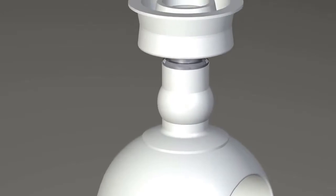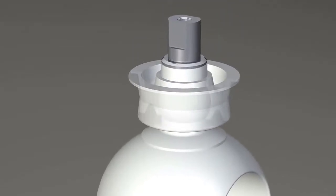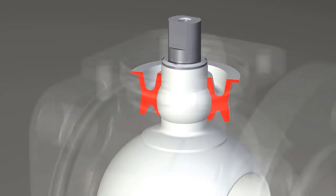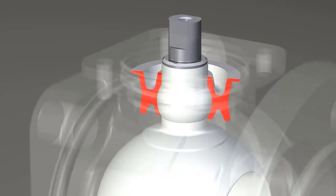The new patented Xomox SX seal with an X-shaped cross-section has been developed to create a tight seal between the media and the atmosphere. As the pressure is increased, it forces the seal against the valve body and the stem. The higher the pressure becomes, the more tightly the medium is sealed.